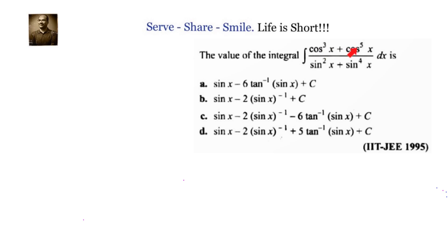Whatever is left out, we need to convert into sin, then simplify. From looking at the options we understood two things: cos needs to be changed to sin, and sin x needs to be taken as a variable. So let's go ahead and do this.